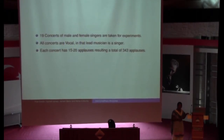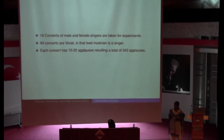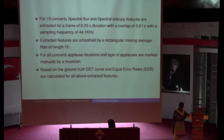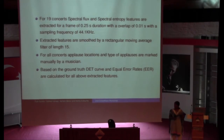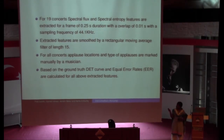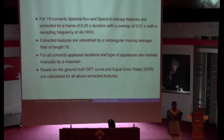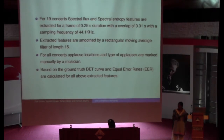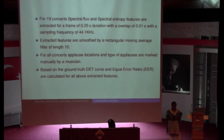The database I have used contains 19 concerts of male and female singers; all concerts are vocal-lead, and each concert has 15 to 20 applause events, giving 343 applause instances in total across all 19 concerts. I extracted spectral flux and spectral entropy using a window size of 25 milliseconds with an overlap of 10 milliseconds at a sampling frequency of 44.1 kHz, and smoothed the features using a rectangular filter of length 15. Applause locations and type of applause — whether inter-piece or intra-piece — were manually marked by a musician named Vignesh to provide ground truth.